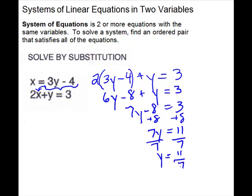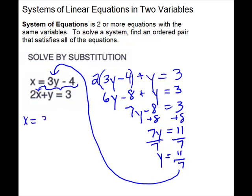So we get y equals 11 over 7. That is the y coordinate. You have to substitute back into one of the equations to solve for x. So I'm going to substitute into the first equation and plug this value back in as the y. x equals 3 times 11 over 7 minus 4. We have to multiply 3 times 11 over 7, so that's 3 over 1. Nothing cancels for us, so we have 33 over 7 minus 4.